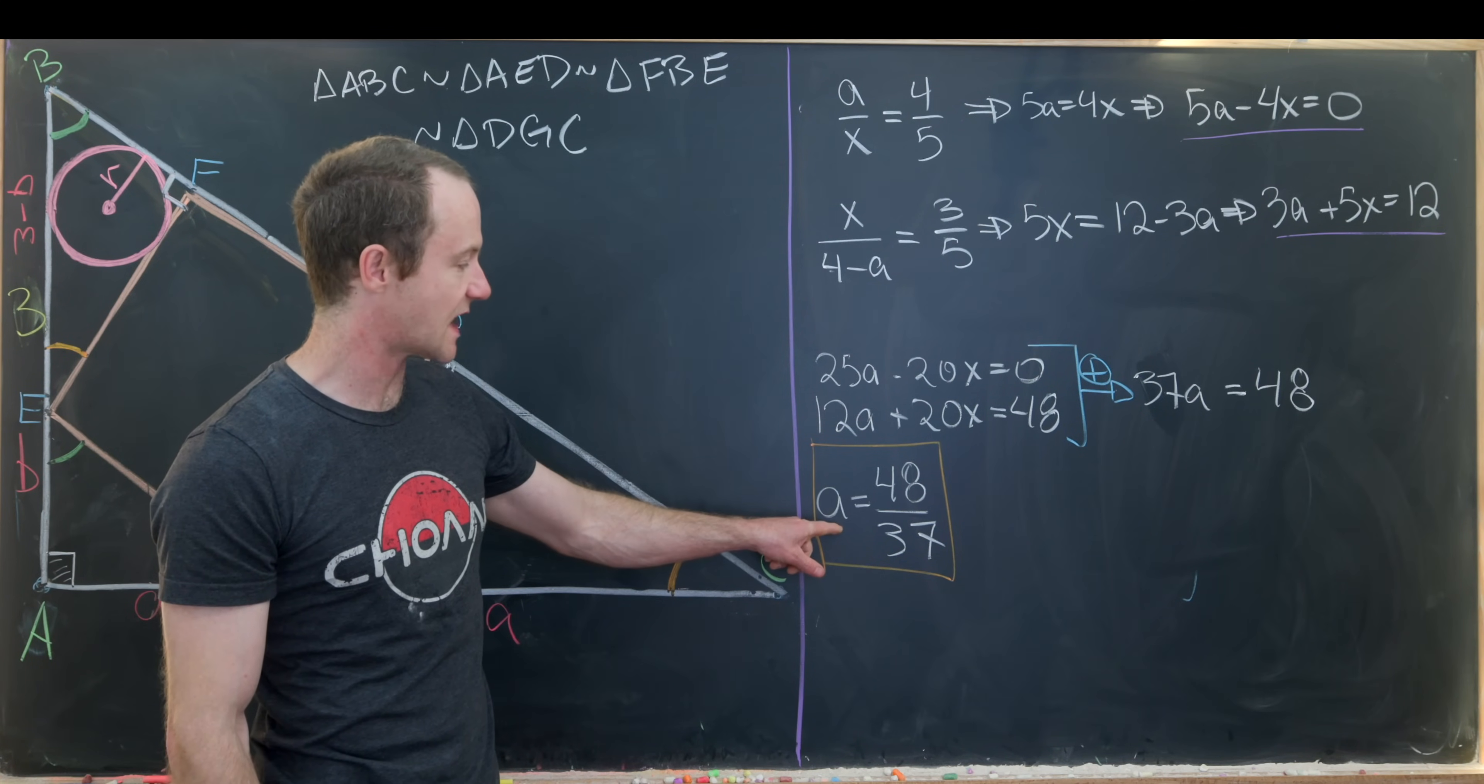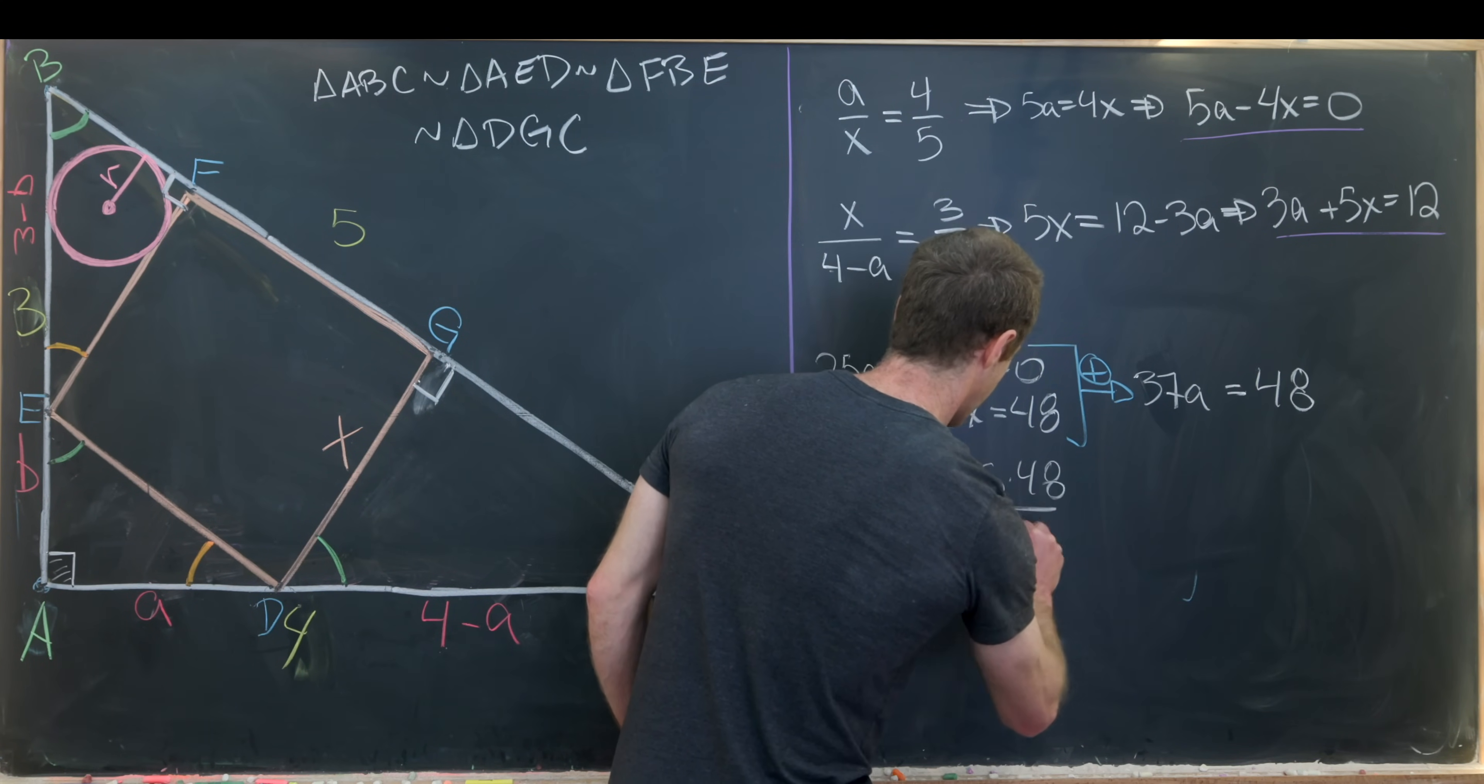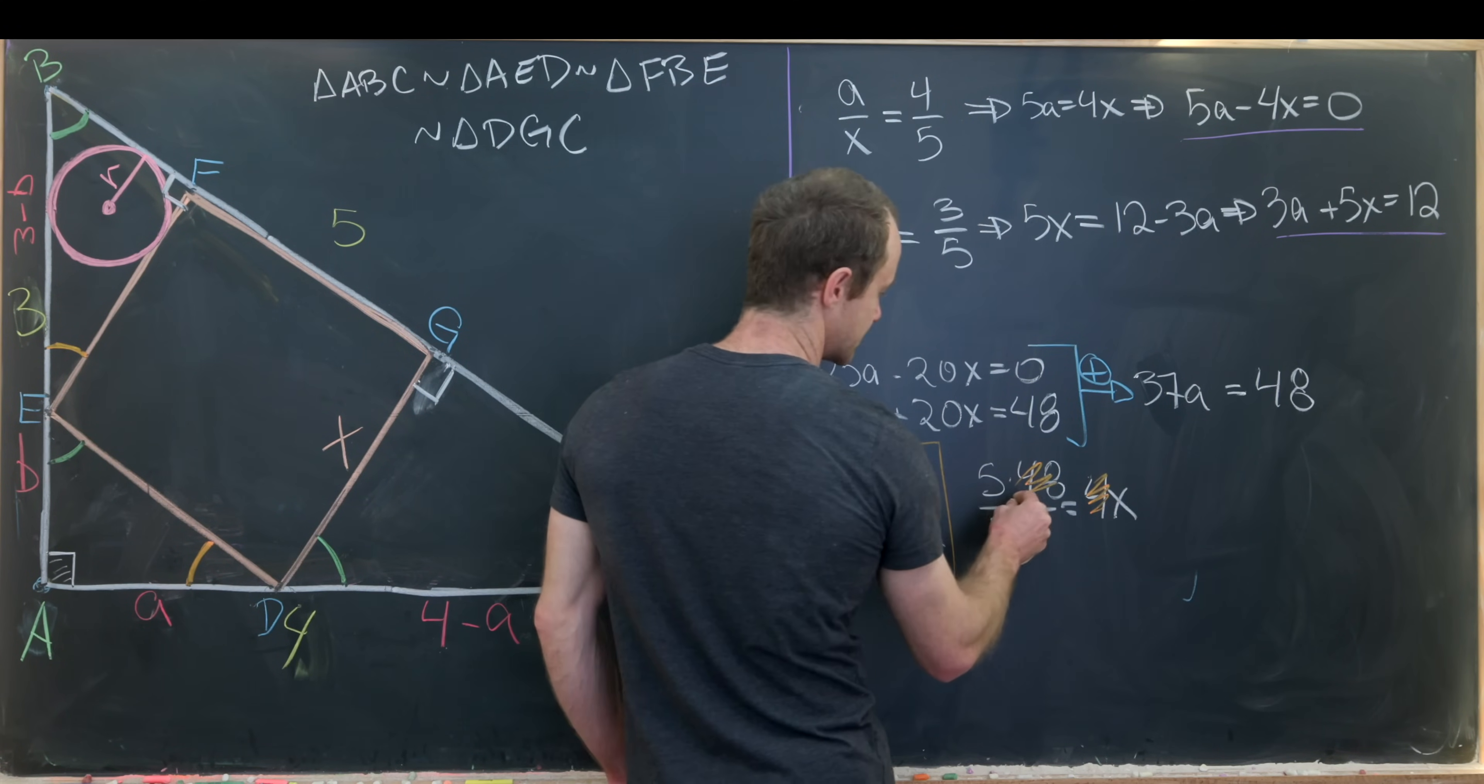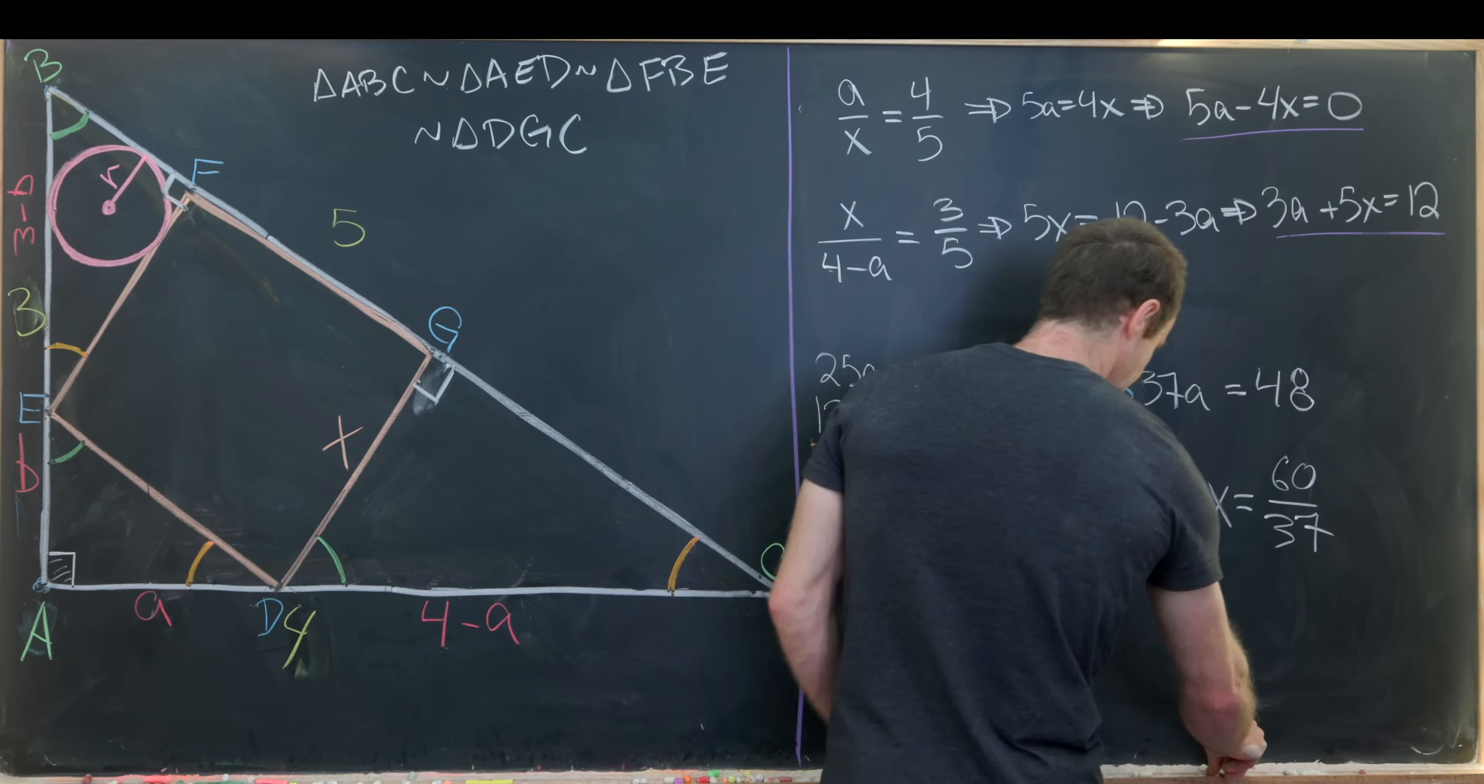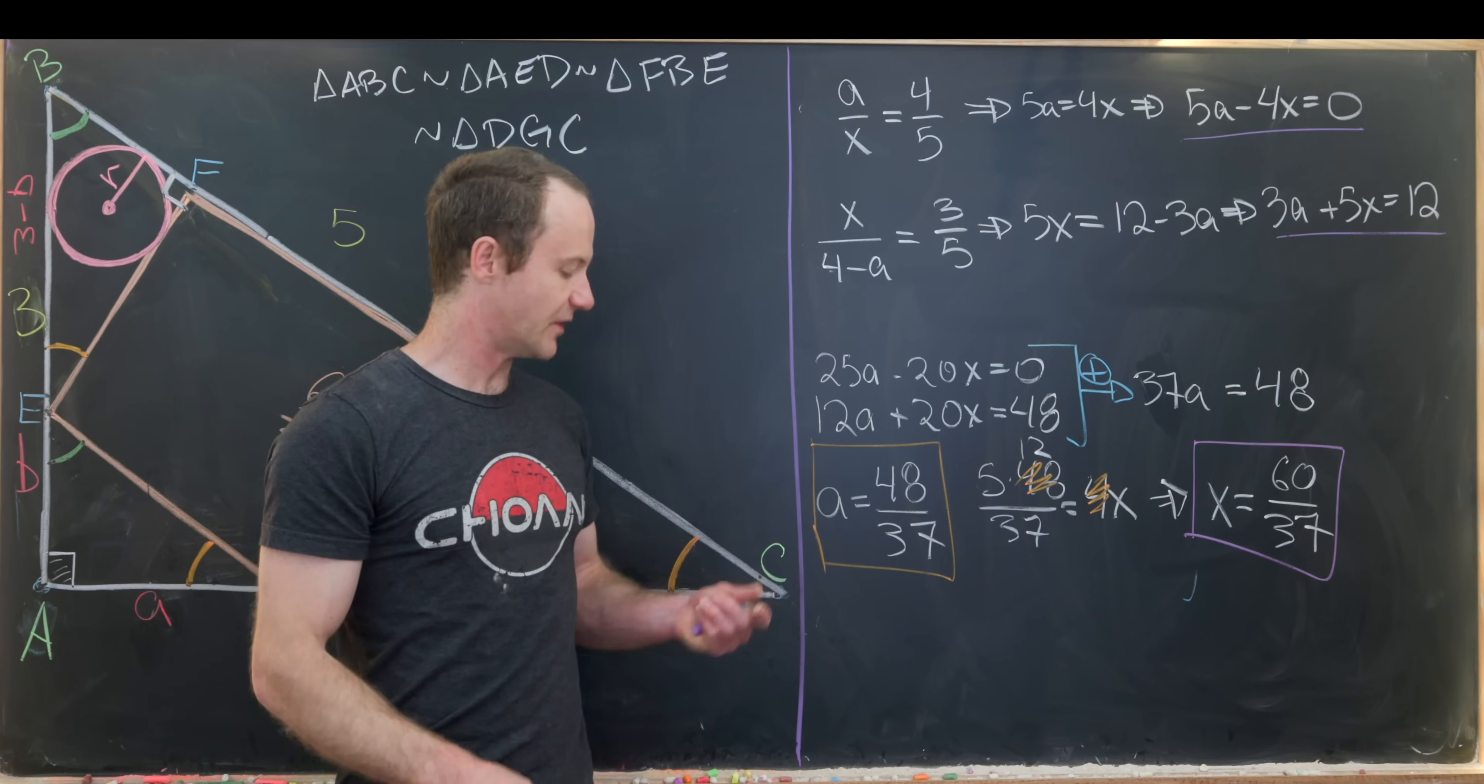And we have our value for our first unknown. And then next up, we can plug this into this equation and we can easily solve for x. So notice we have 5a, so that's going to be 5 times 48 over 37 equals 4x. Now we can cancel the 4 here and this 48 down to a 12. And that leaves us with x equals 5 times 12, which is 60 over 37. So we've achieved our first goal. I can erase this and input the side length of this square, which is 60 over 37.